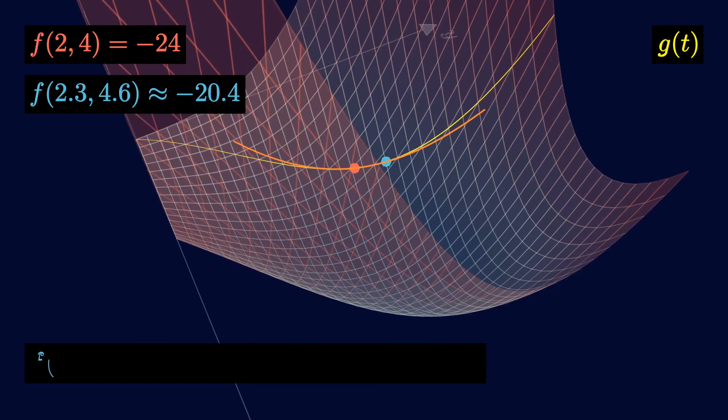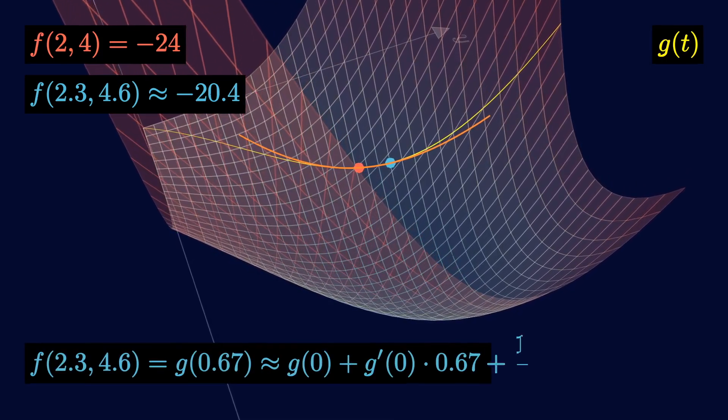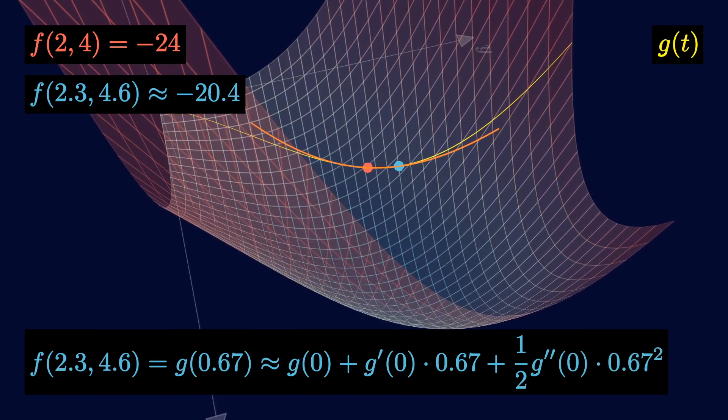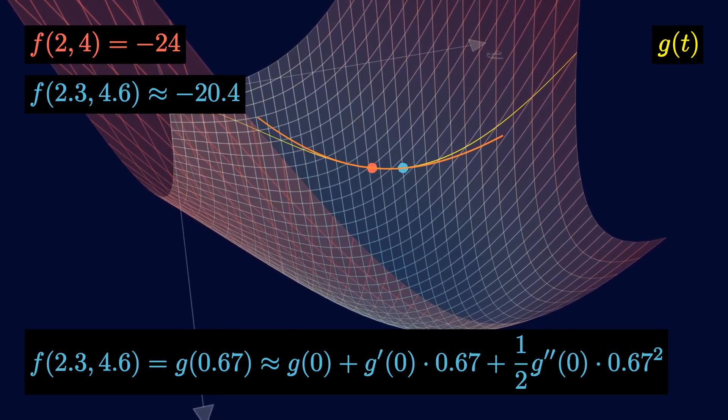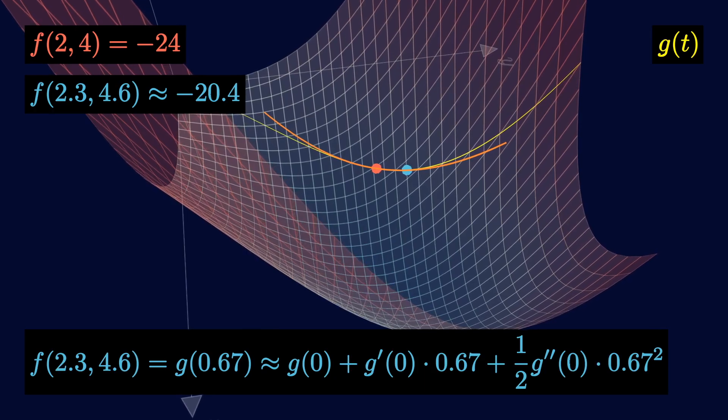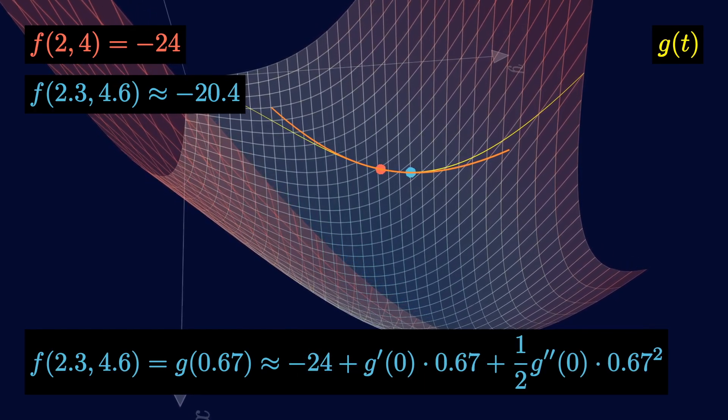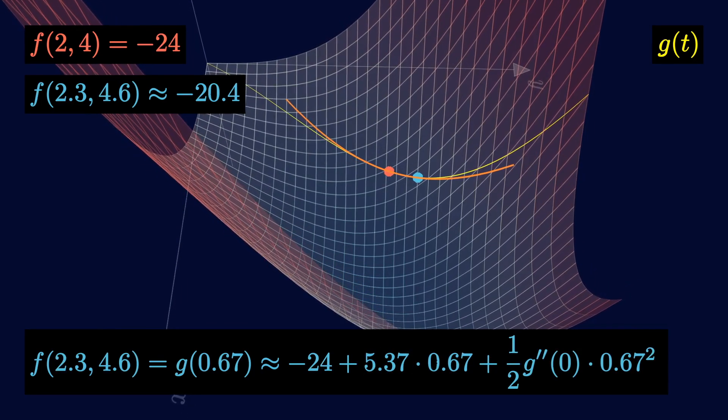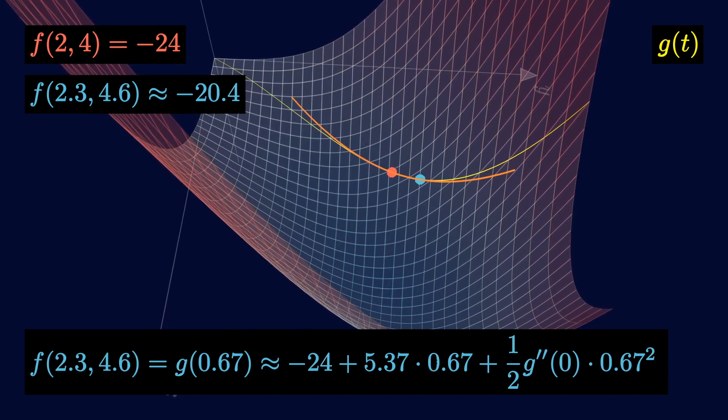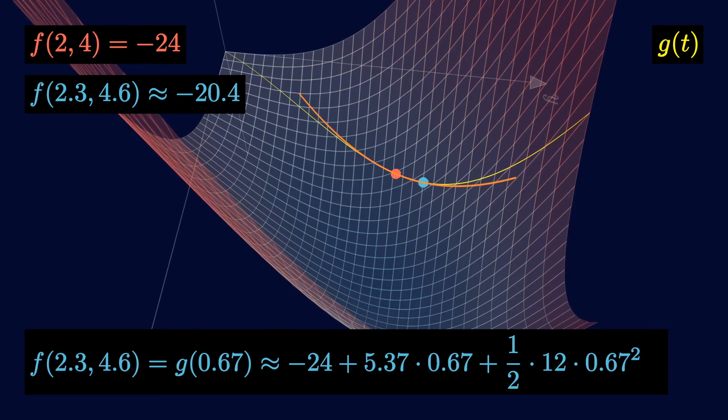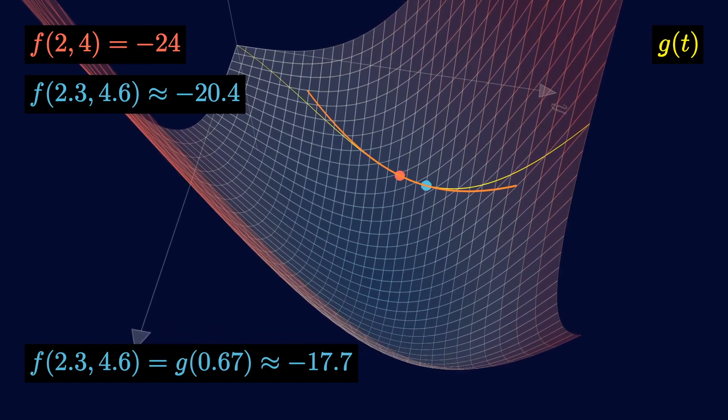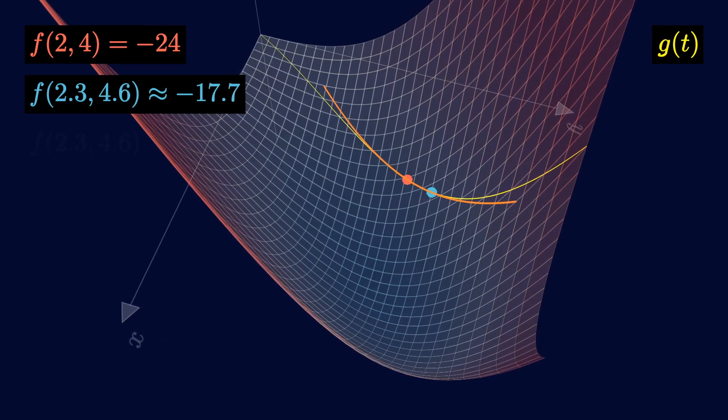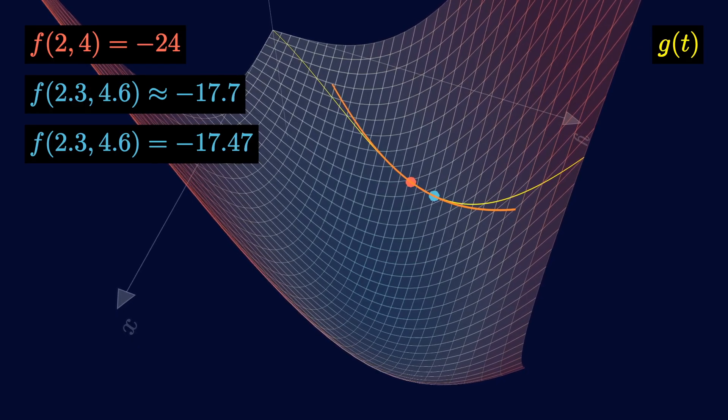For the quadratic Taylor estimate, we have the linear estimate plus this extra term 1 half g double prime of 0 times 0.67 squared, which remember is the distance between the two points squared. Remember from before that g of 0 is minus 24 and g prime of 0 was the directional derivative, which was around 5.37. Now suppose we know the second derivative as well, and it's equal to 12. Then this whole expression evaluates to minus 17.7, which is our new estimate for the blue point. The actual function value at the blue point is minus 17.47, so this is a pretty good estimate.